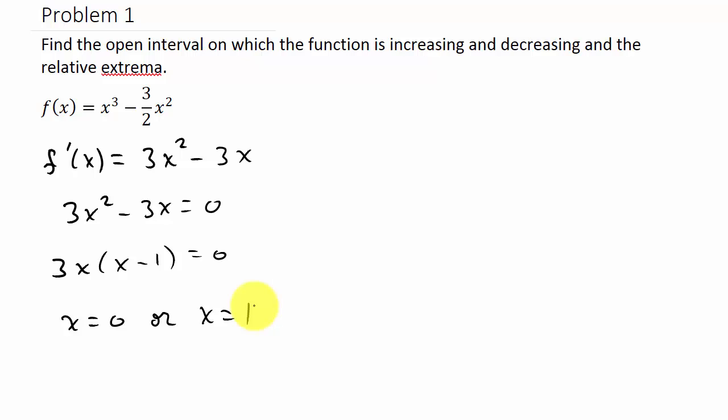Okay, so these are my critical numbers. So what we do now is we set up a number line and we plot our critical numbers on the number line - the zero and the one. And then what I have to do is I have to choose a number from each region here. So I'll choose x = -1, x = 1/2, and x = 2.